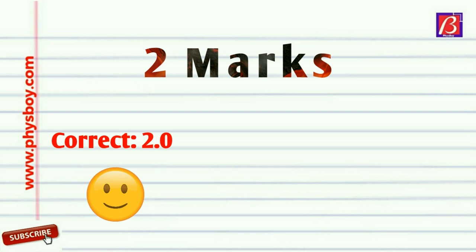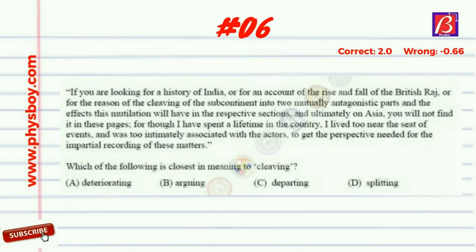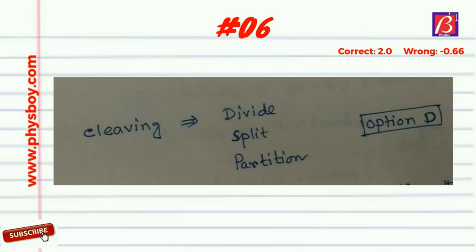Now let's move to two-mark questions. For a correct answer you get two marks, and for a wrong answer you get minus 0.66 marks — be careful of negative marking. Question number six asks which of the following is closest in meaning to 'cleaving.' From the paragraph, cleaving means to divide, split, or partition. Option D, 'splitting,' is the correct answer.